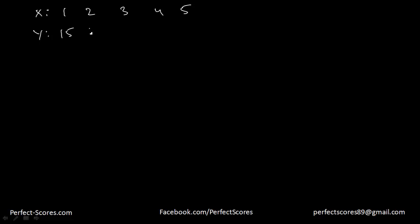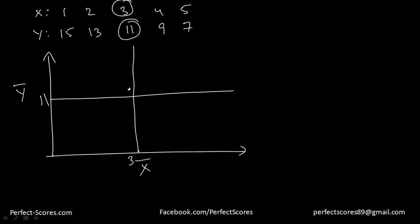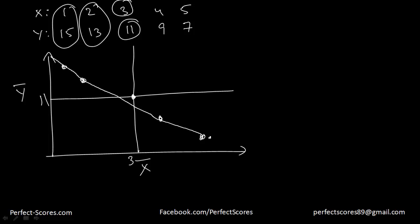Let's take a negative correlation example. Suppose X = 1, 2, 3, 4, 5 and Y = 15, 13, 11, 9, 7. The mean of X is 3 and the mean of Y is 11. Plotting the points: (1,15) lies here, (2,13) here, (3,11) here, (4,9) here, (5,7) here. You can see all points lie in the second and fourth quadrant — confirming this is a negative correlation.